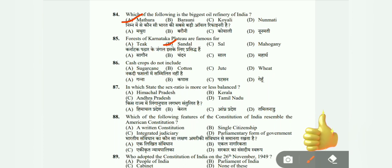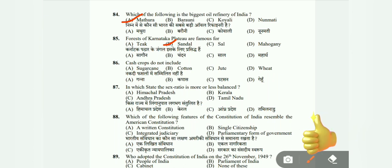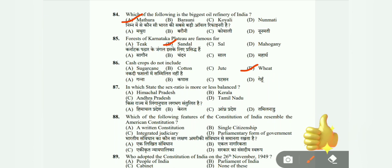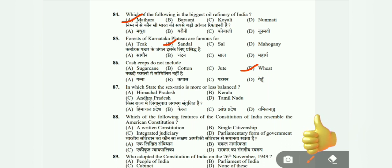Question 86: Cash crops does not include sugarcane, cotton, jute, or wheat? The correct answer is D, wheat. Question 87: In which state is the sex ratio more or less balanced — Himachal Pradesh, Andhra Pradesh, or Tamil Nadu? The correct answer is D, Tamil Nadu.